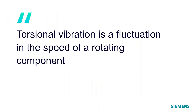So torsional vibration is up and down speed fluctuation of a rotating piece. What we want to do with our measurements for torsional vibration is understand the amount of vibration we have, and what operating conditions that torsional vibration is occurring under, so that we have some idea of what the root cause is. Then we can go work on that root cause and hopefully improve our torsional vibration situation.